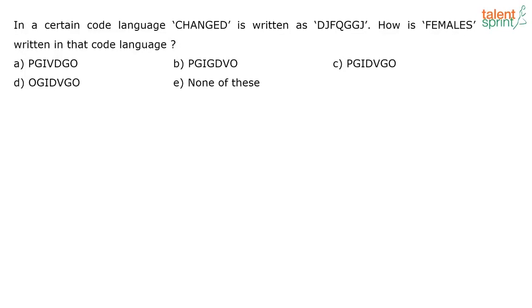In a certain code language, changed is written as this. How is females written in that code? Try it and give me the answer. What is the pattern that is followed here? C-H-A-N-G-E-D. It is basically a crisscross pattern. It is being followed. Here you have C plus 3.